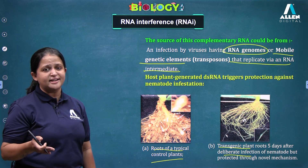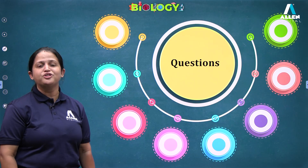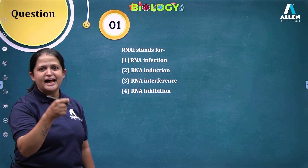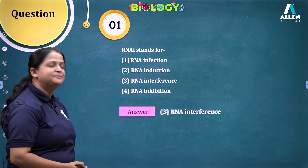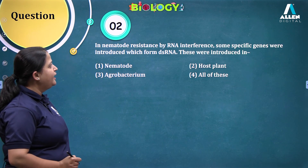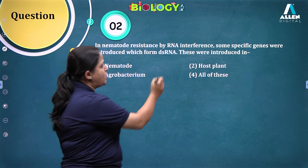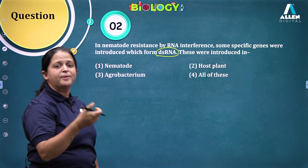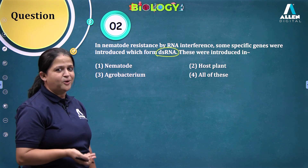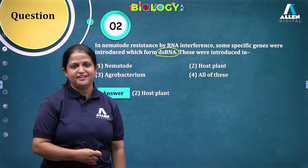This is a very important novel strategy employed to develop nematode resistant plants. Now a few questions: RNAi stands for RNA interference. In nematode resistance by RNA interference, specific genes are introduced which form double-stranded RNA. These genes were introduced in the host plant, that is the tobacco plant. This concludes the topic of RNA interference. Thank you all.